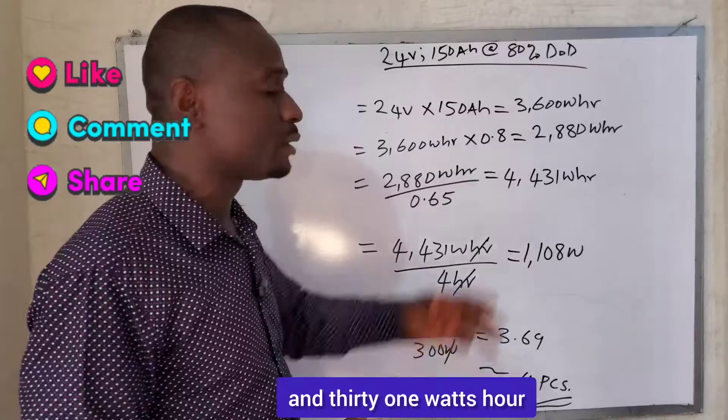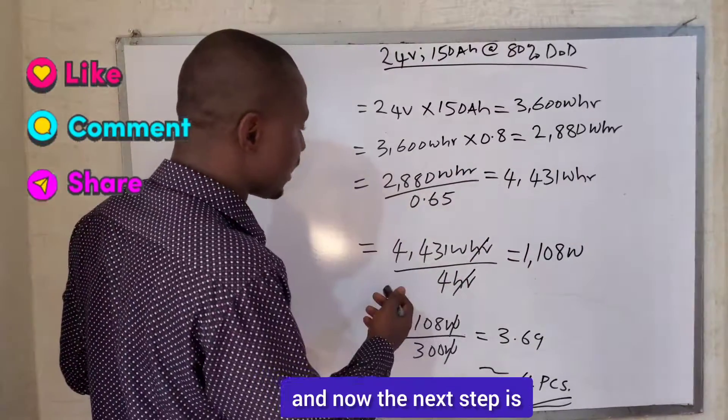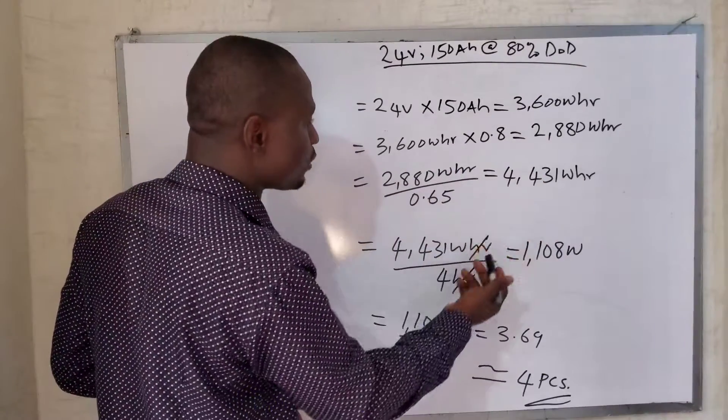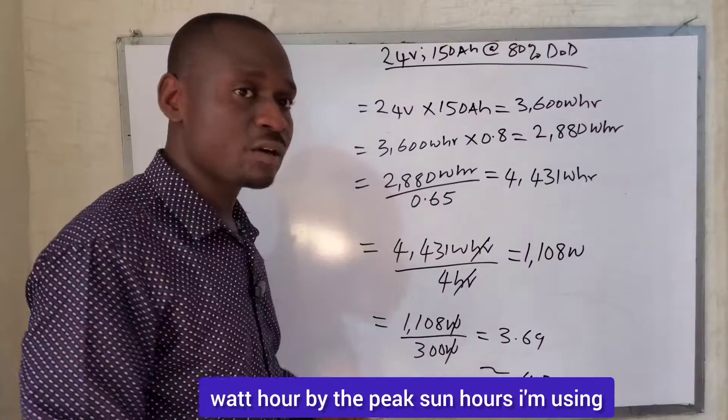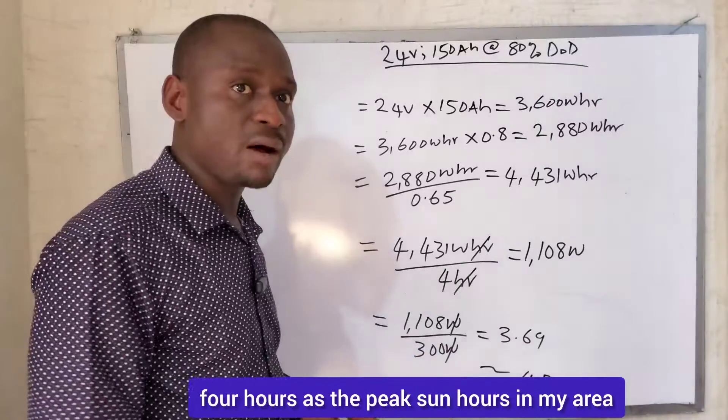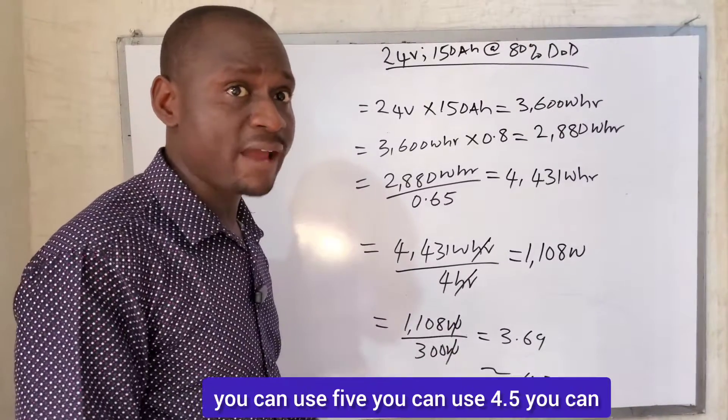Now the next step is that we are dividing this 4,431 watt-hours by the peak sun hours. I'm using 4 hours as the peak sun hours in my area.